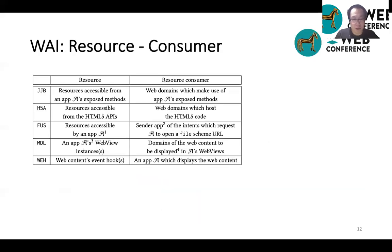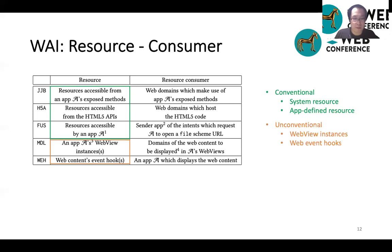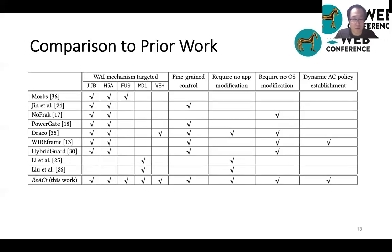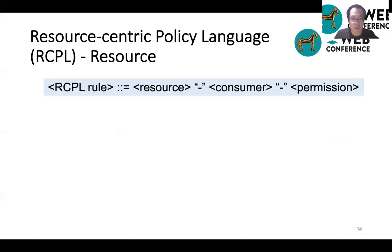Here is a table showing the resources and consumers of the five web app interaction mechanisms. For JGB, HTML5 APIs, and file URL schemes, the resources are all conventional resources like system resources or app-defined resources. The WebView instances in MDL and Web Event Hooks in WH are unconventional resources. Our solution can work with all five mechanisms coherently, with fine granularities at the resource level and without app or OS modification. It can also generate new or update existing access control policies during runtime.